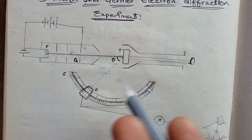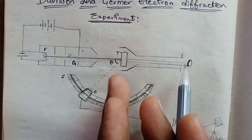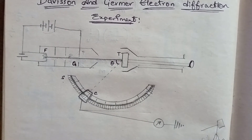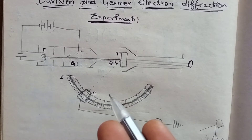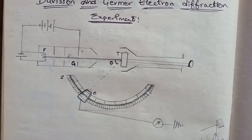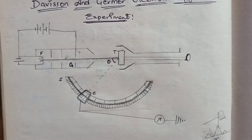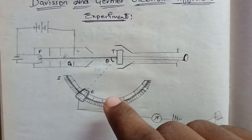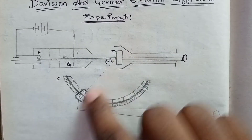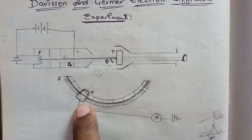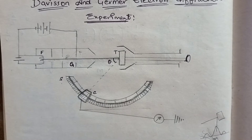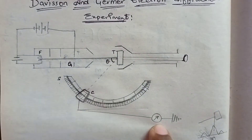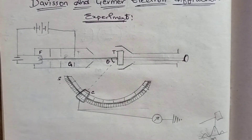Let me explain the experimental procedure. We have the electron gun, a nickel target, a Faraday cylinder, and a circular scale. We measure the angle and the intensity of the electrons. After the electrons enter the Faraday cylinder, a galvanometer measures the deflection. The intensity of the current corresponds to the number of electrons collected.